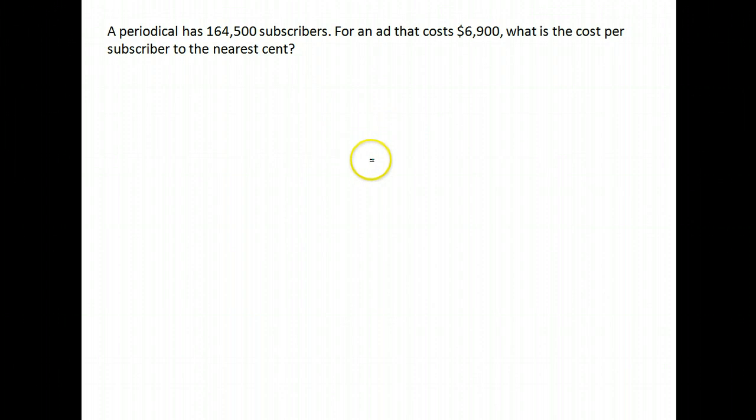Here's another example. A periodical has 164,500 subscribers for an ad that costs $6,900. What is the cost per subscriber? So again, cost is dollar amounts, per is divided, and subscriber is the number of subscribers.